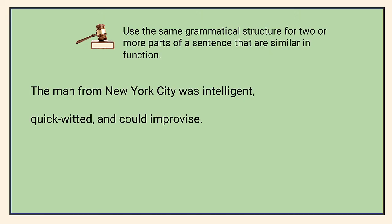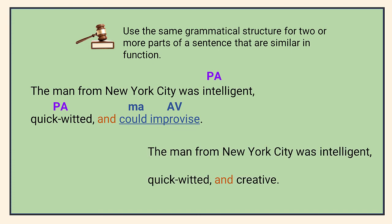Find the faulty parallelism in the sample sentence and try to think of how you would correct it. The sentence contains two predicate adjectives following the be verb 'was' describing the subject 'man.' The third item in this series is a verb phrase — it doesn't fit the pattern of the other two. Sometimes we can't simply transform a word into a different part of speech; we may have to use a different word to maintain the parallel structure. 'Improvisational' doesn't quite capture a personality trait as 'intelligent' and 'quick-witted' do, for example.